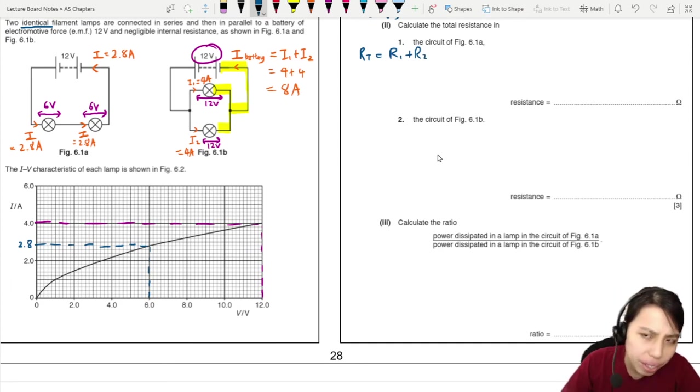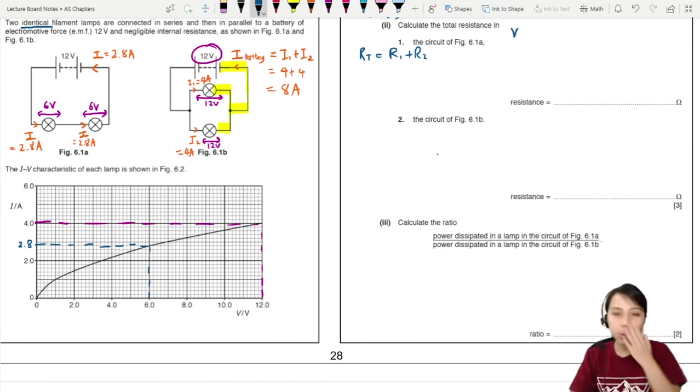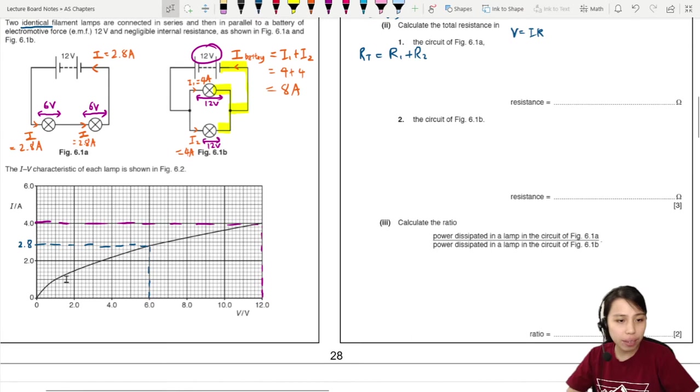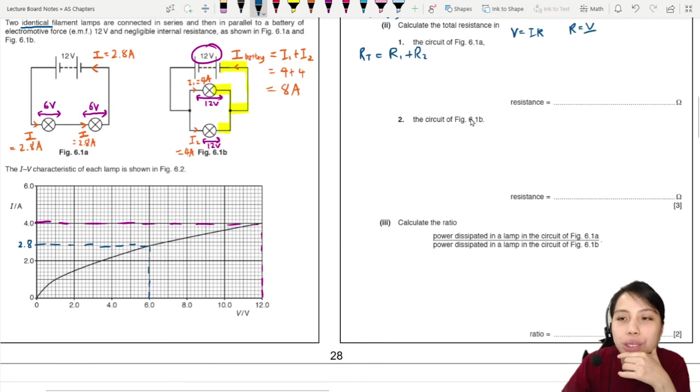And to find resistance, you need to use Ohm's law. Oh, don't call it Ohm's law. These are filament lamps. They don't follow Ohm's law. We just call it the VIR ratio. So V equals to IR. They do not follow Ohm's law. Look at their I-V curve. It's a curve. It's not a straight line. VIR, VIR. So R equals to V over I.